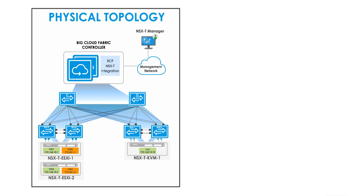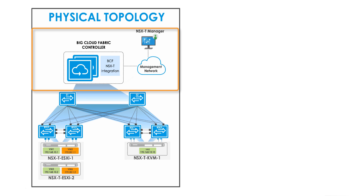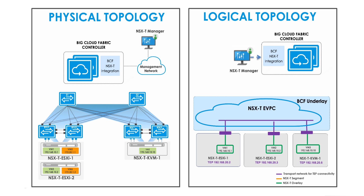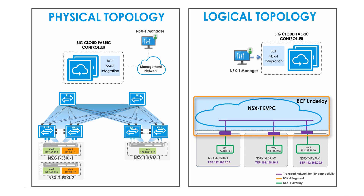Now let's take a look at the demo topology. The BCF controller is managing a two-rack leaf-spine fabric that provides underlay connectivity to two ESXi and one KVM node as shown here. BCF controller is communicating with the NSX-T manager over the management network. Looking at the logical topology, we can see that each node has been configured as an NSX-T TEP and has VMs sitting behind it. A transport subnet will be auto-created in the NSX-T eVPC to provide the underlay connectivity for establishing the Geneve tunnels between these nodes.